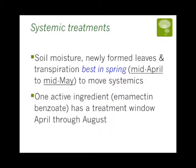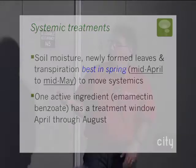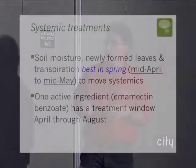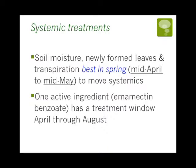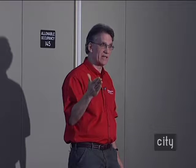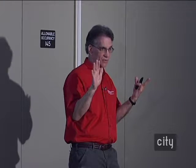The best time for systemic treatment is mid-April to mid-May when the tree is breaking buds, growing well, and there's good soil moisture. That's the best time to apply treatment. One treatment with the active ingredient emamectin benzoate has a treatment window from April through August. After July the leaves have done their job for the season, so a pest that hits leaves in September is almost a blessing — you don't have to rake them up.